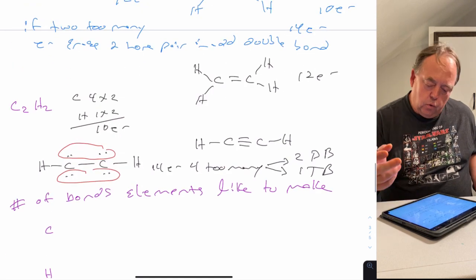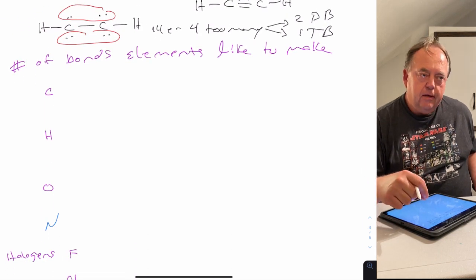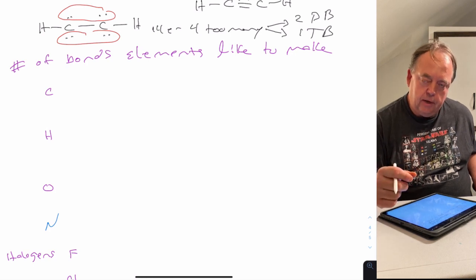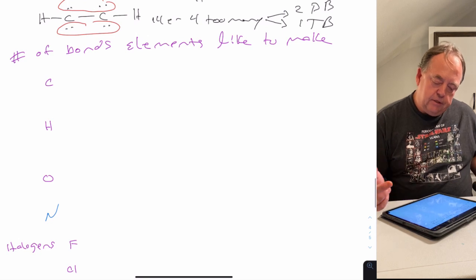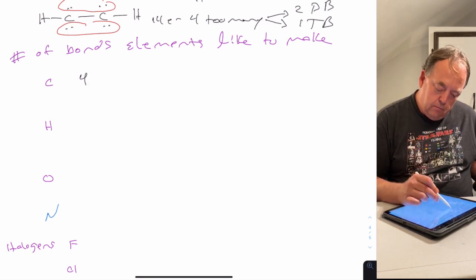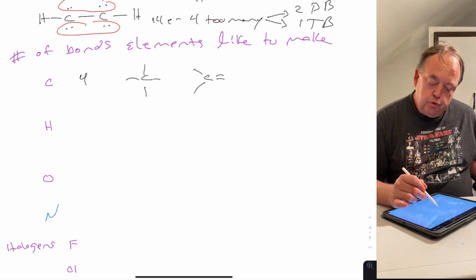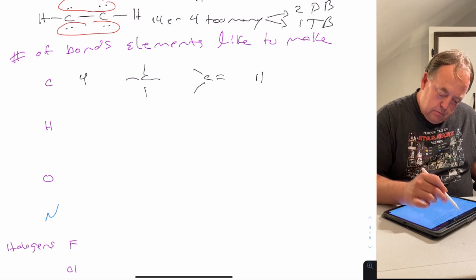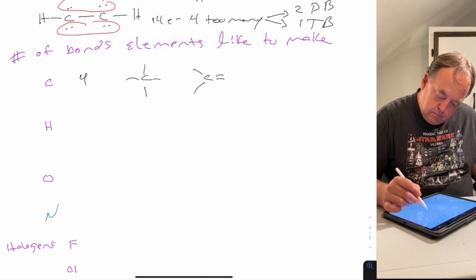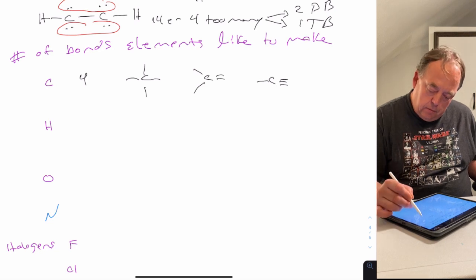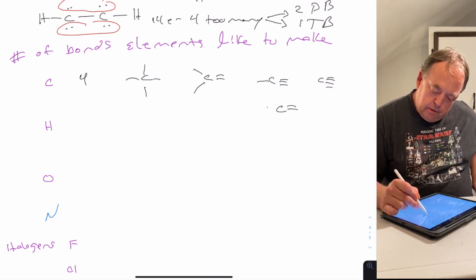Hopefully you remember how to write Lewis structures from general chemistry — if not, check the general chemistry one lectures for video lectures on Lewis dot structures. One key thing to keep in mind: how many bonds each element likes to make. Carbon has four valence electrons so it likes to make four bonds: four single bonds, two single bonds and one double bond, one single bond and one triple bond, or two double bonds.